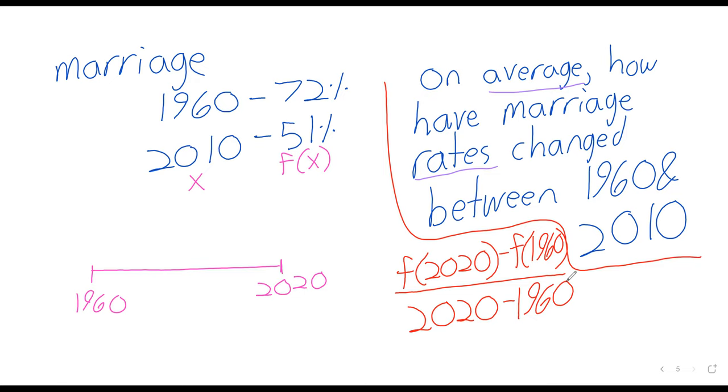You might sort of object, well, we're not given a function, so how do we know f of 1960 and how do we know f of 2010? And it's true we're not given a formula, we're not given an equality with squares and multiplication and stuff. But we are given data.